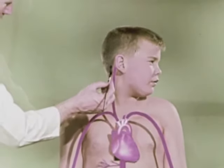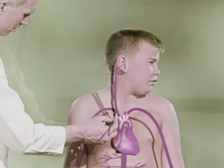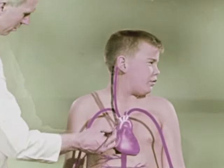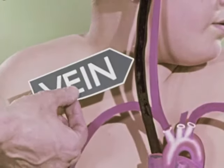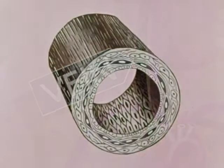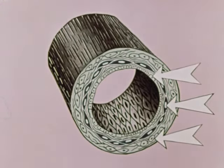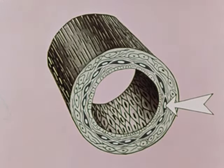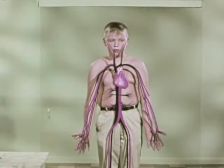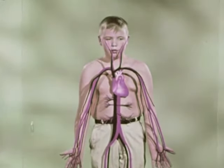Another kind of blood vessel carries blood back to the heart. This blood vessel is a vein. Like arteries, veins are tube-shaped and made up of three layers. But veins are thinner than arteries because the layer of muscle in veins is thinner. Now we've drawn most of the larger veins and arteries in the body. Notice that most of them lie close together.